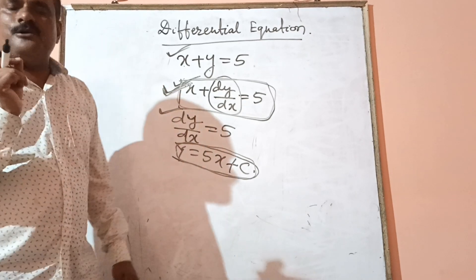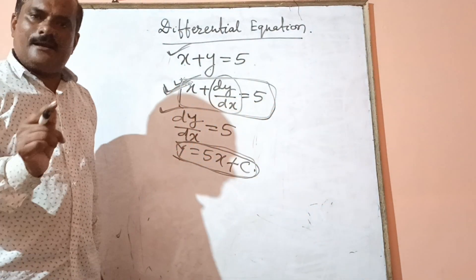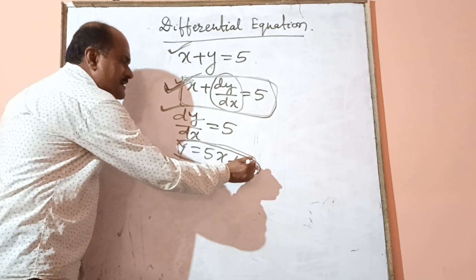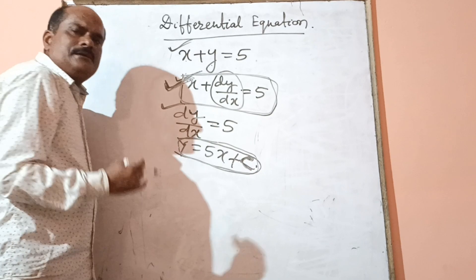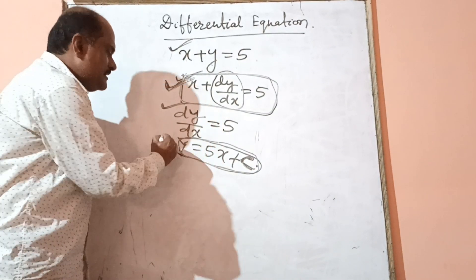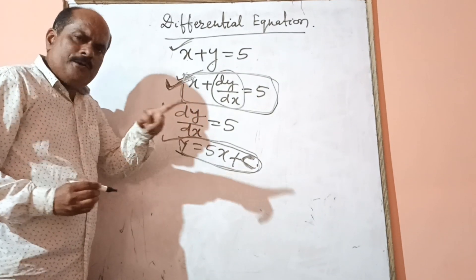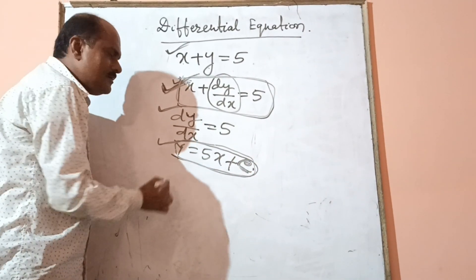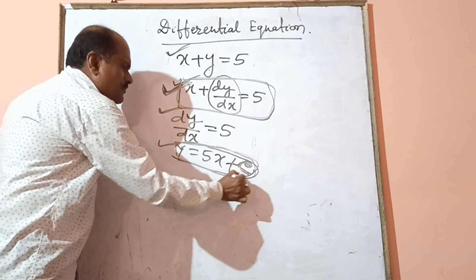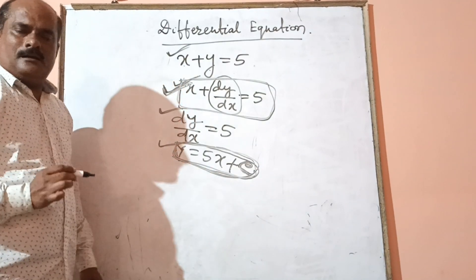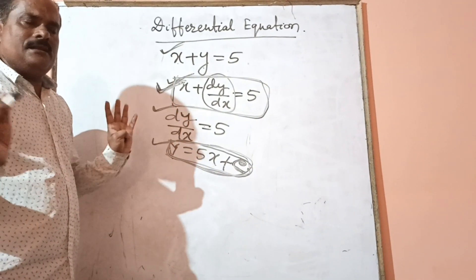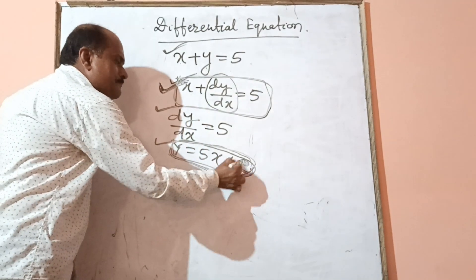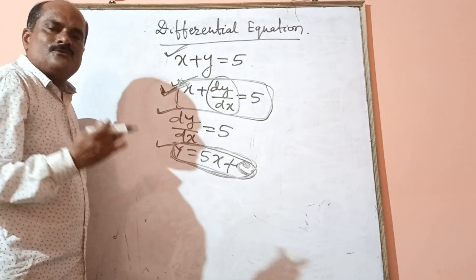The solution of a differential equation is the relation between the variables which does not contain a derivative and satisfies the differential equation. Here, c is an arbitrary constant. For different values of c, we get different solutions, for which this is known as the general solution. If we get a solution at a particular point, we get a particular value of c, and that is known as the particular solution.